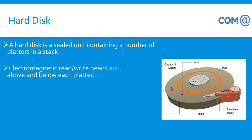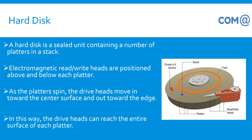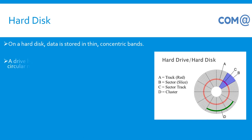We all know a hard disk is a sealed unit containing a number of platters in a stack. Electromagnetic read and write heads are positioned above and below each platter. As the platter spins, the drive heads move in towards the center of the surface and out towards the edge, allowing the drive heads to reach the entire surface of each platter.